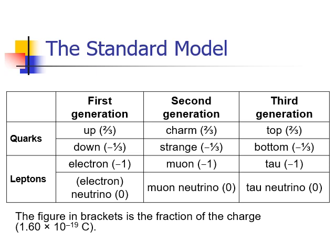If we put those into a table, we can see on the left we've got the first generation. This is everything that is stable within the universe, made up of up and down quarks, an electron that we're familiar with, and an electron neutrino.